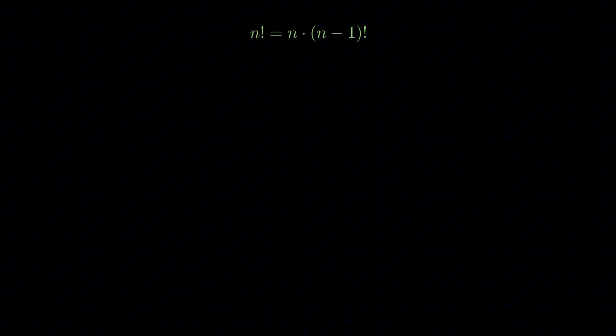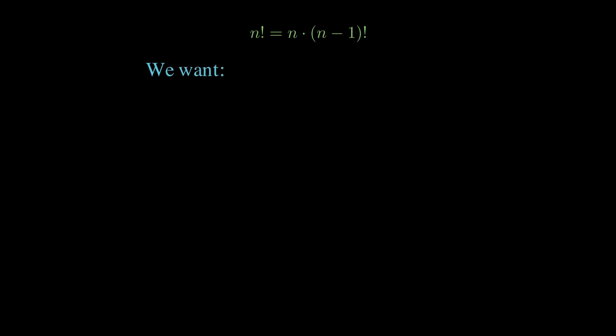But how do we find this curve? Let's work it out step by step. We want a function f that satisfies f of x equals x times f of x minus 1, not just for integers, but for all x.